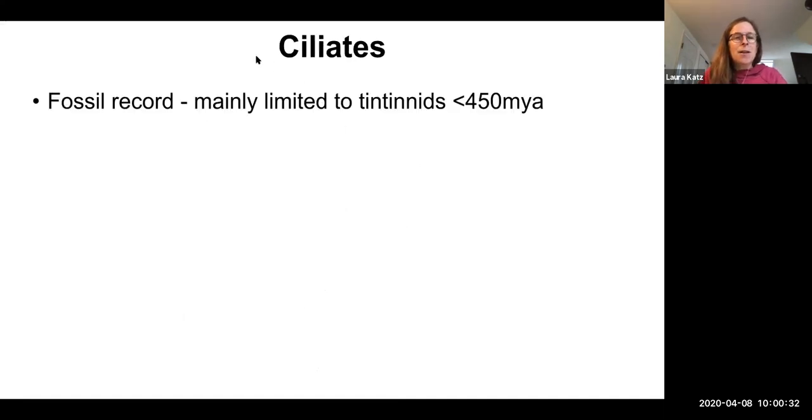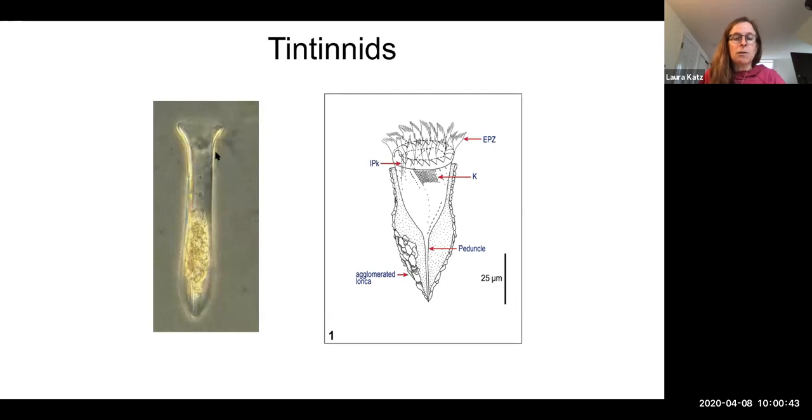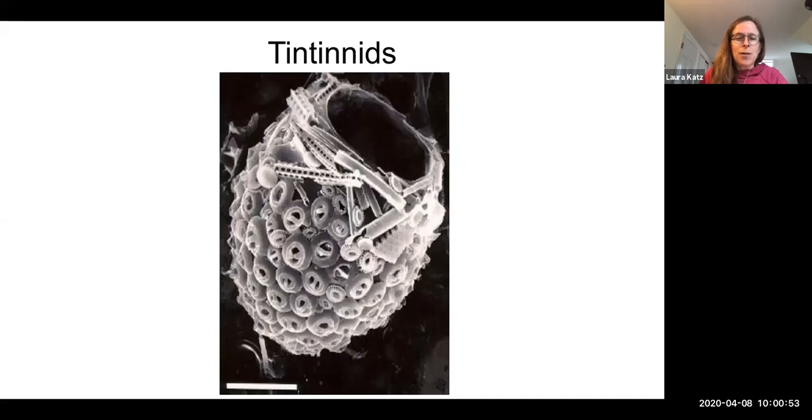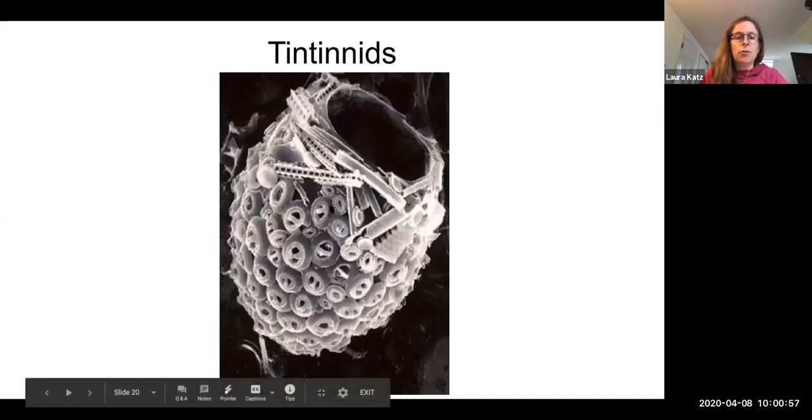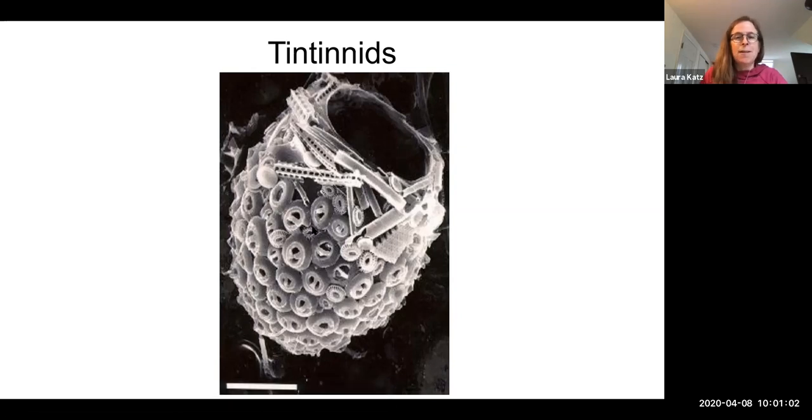The fossil record of ciliates is mainly limited to post-cambrian about 450 million years ago, and it's mostly these shell building things called tintinnids. Here's a lorica, a clear lorica, and then we get these agglutinated lorica. So here's the cell of the ciliate, and then here's the shell. Just to show you one more of these shells, this one also is glued diatoms and haptophytes, coccolithophores, all to the top side. So these things leave a good fossil record. Many other ciliates do not.